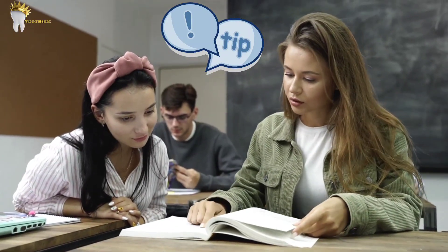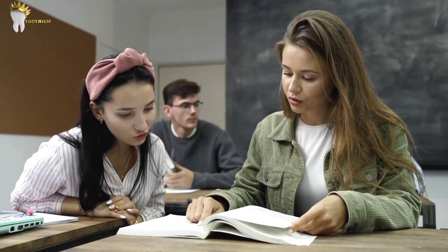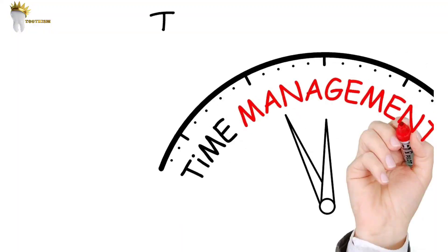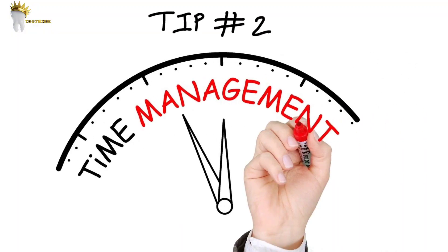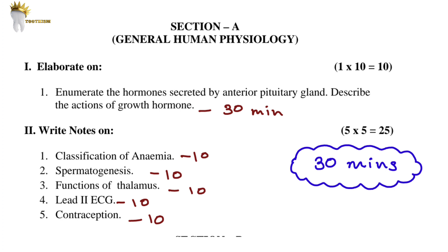An important part of theory exams is time management. Sometimes we lose track of time, so set aside a specific time for each question and at least 30 minutes towards the end for reviewing all of your answers and completing any unfinished ones.